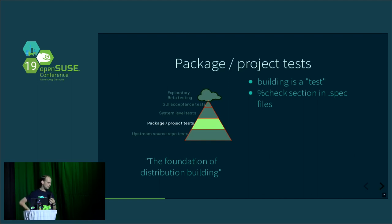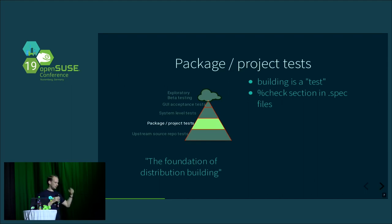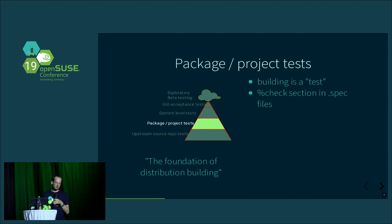When talking about packaging using RPM spec files, there is a build rule, a preparation rule, and also a rule called '%check'. If you use that, you can run the tests that you already ran at the source code repository level within OBS as well. The advantage is that you do this for all the different combinations of distributions, versions, and architectures I mentioned earlier.